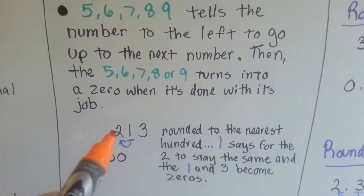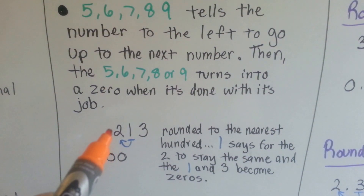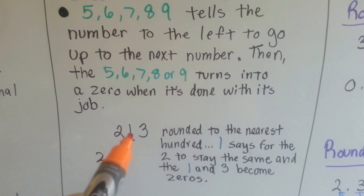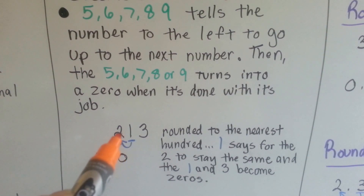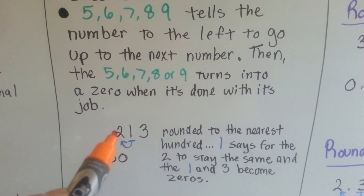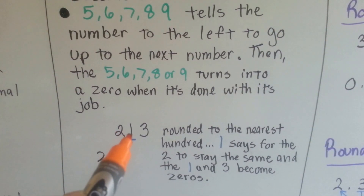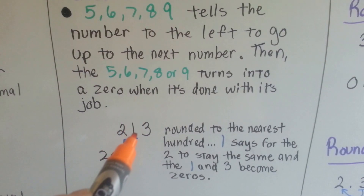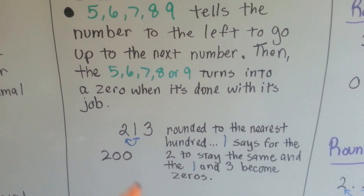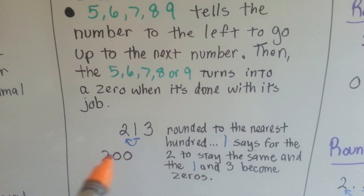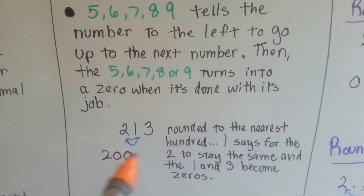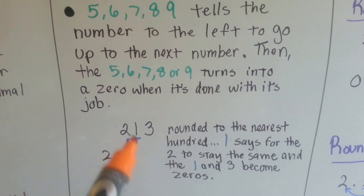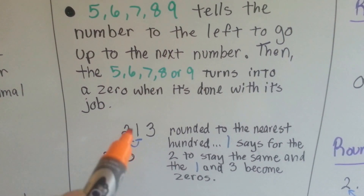So let's look at these. If we were supposed to round 213 to the nearest hundred, the one tells the two to stay the same. And then when the one is finished with its job, it turns into a zero and it makes the three turn into a zero. And then we have 200, rounded to the nearest hundred. The one told the two to stay the same.